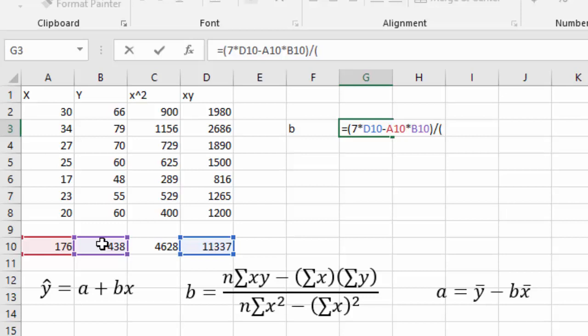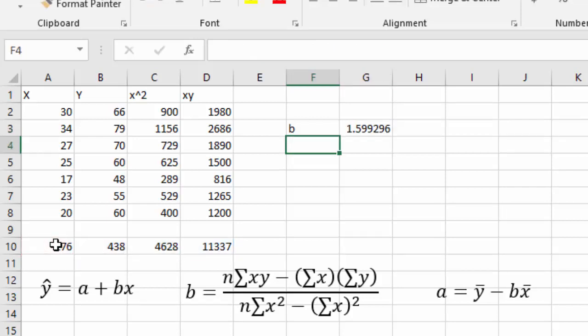Next the b formula says we take the sample size again of seven times the x squareds. Click that cell. Minus the sum of the x's squared, shift 6 and then the number 2. Close the parentheses on the denominator and I find b my slope is 1.599.